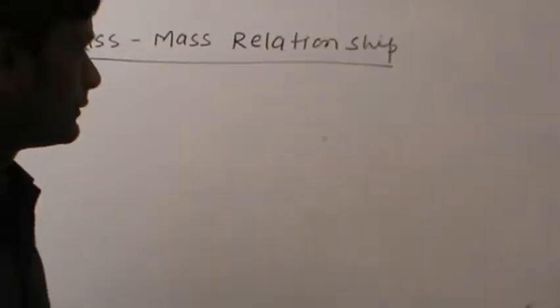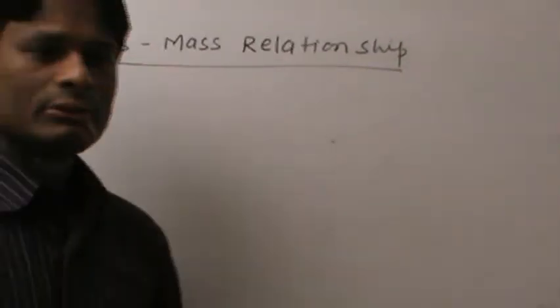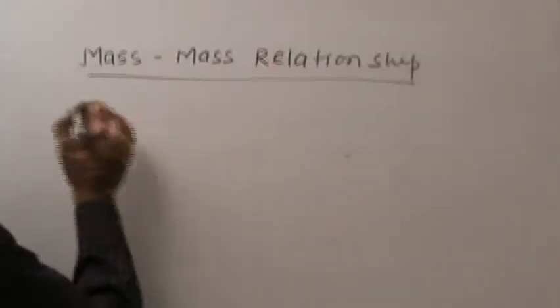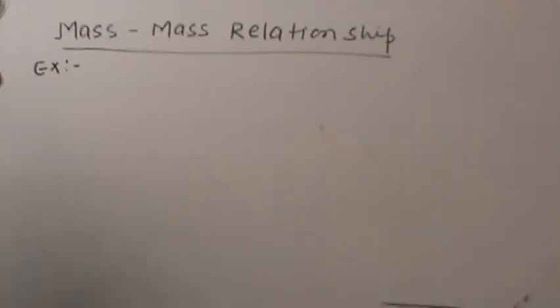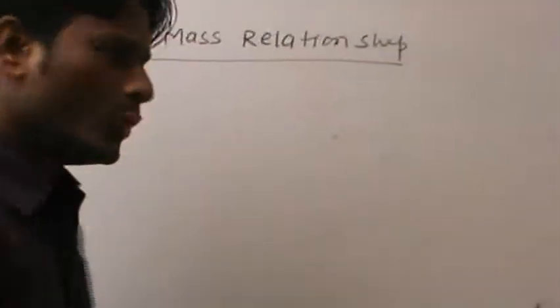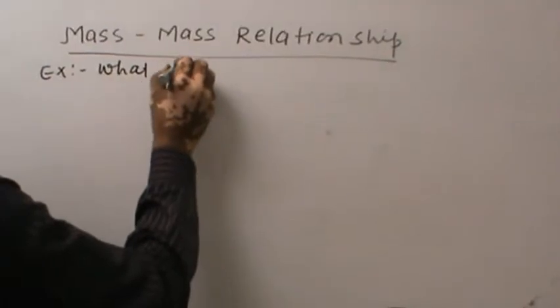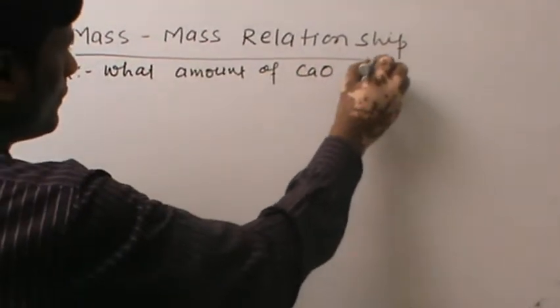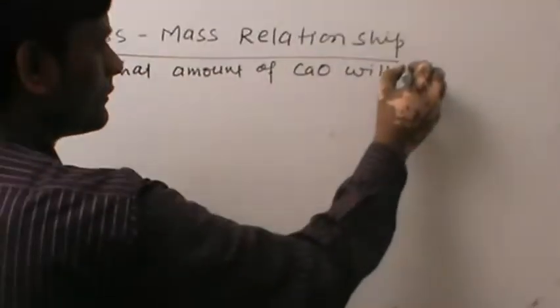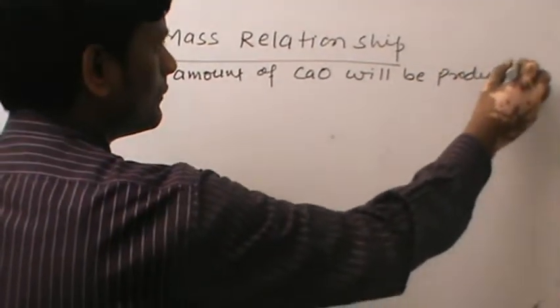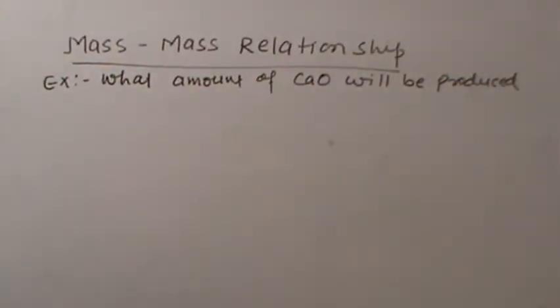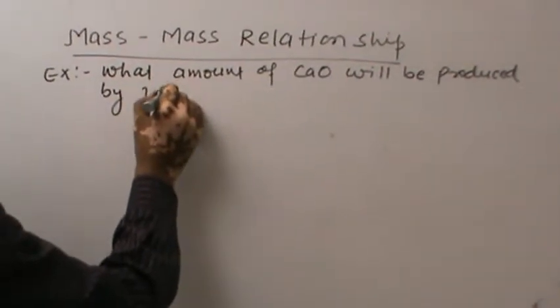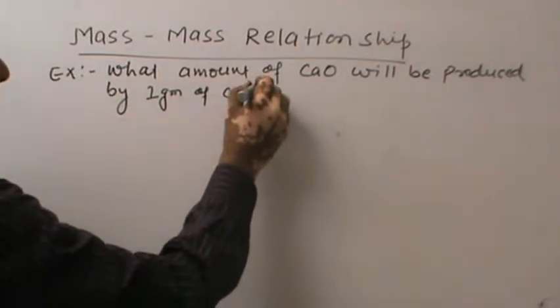For the calculation of this relationship, I am going to take an example. That is, what amount of CaO will be produced by one gram of calcium.